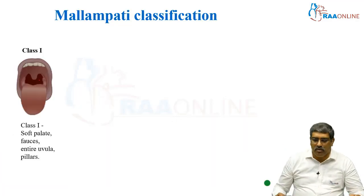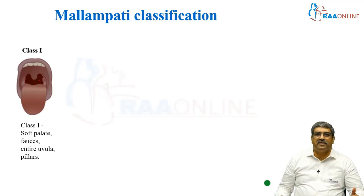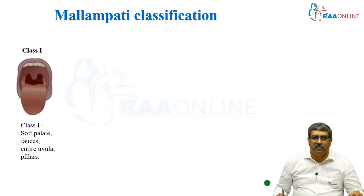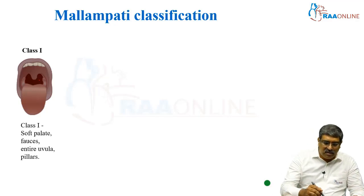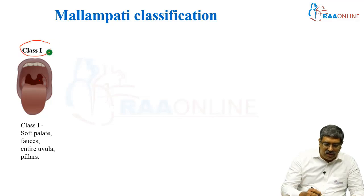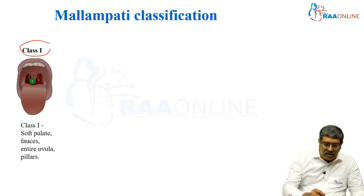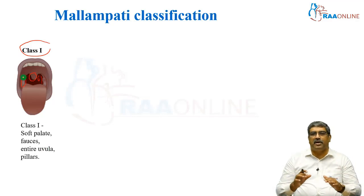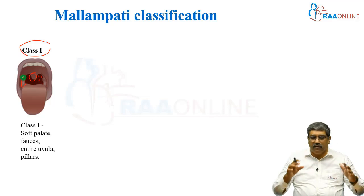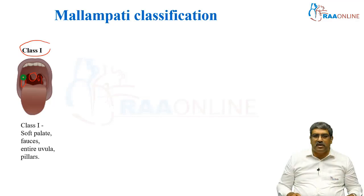Coming to Mallampati classification, we have four classes. Class 1 is where you can see the soft palate, you can see the fauces, you can see the entire uvula as well as the pillars — that is Mallampati 1. The entire thing will be visible.